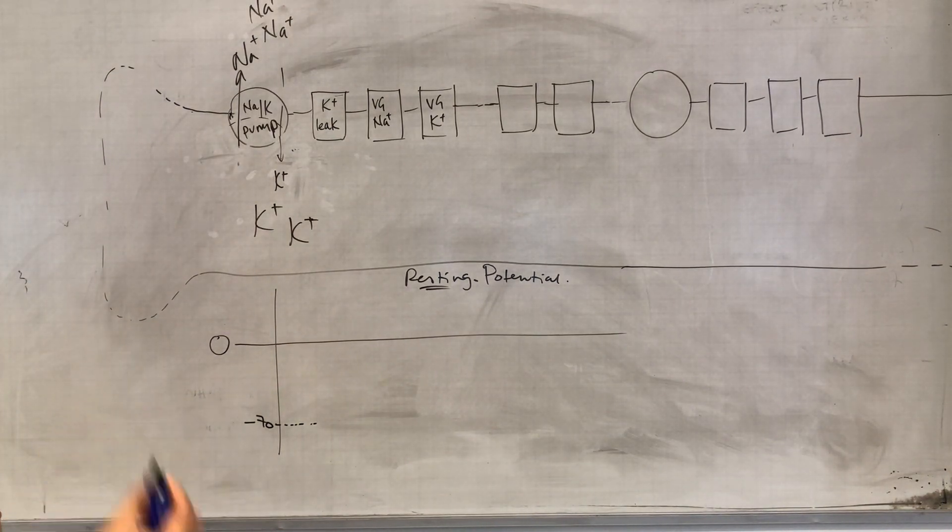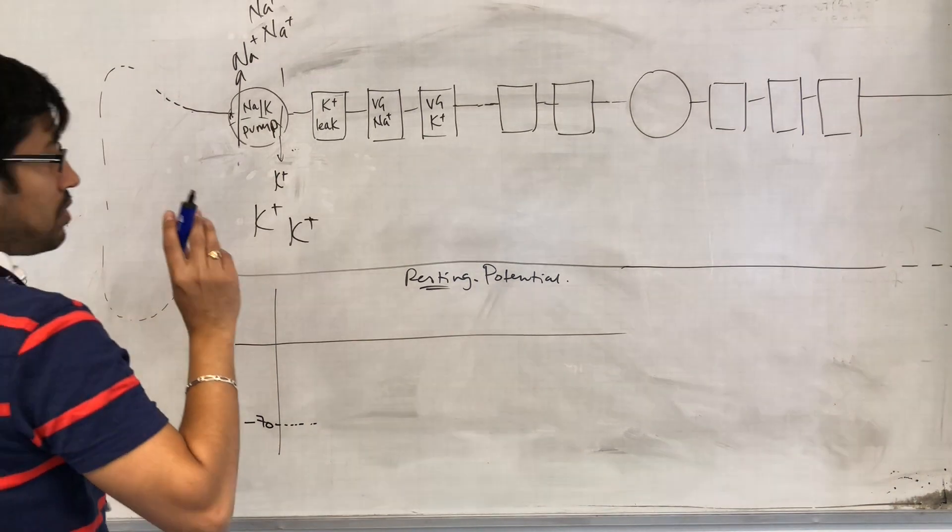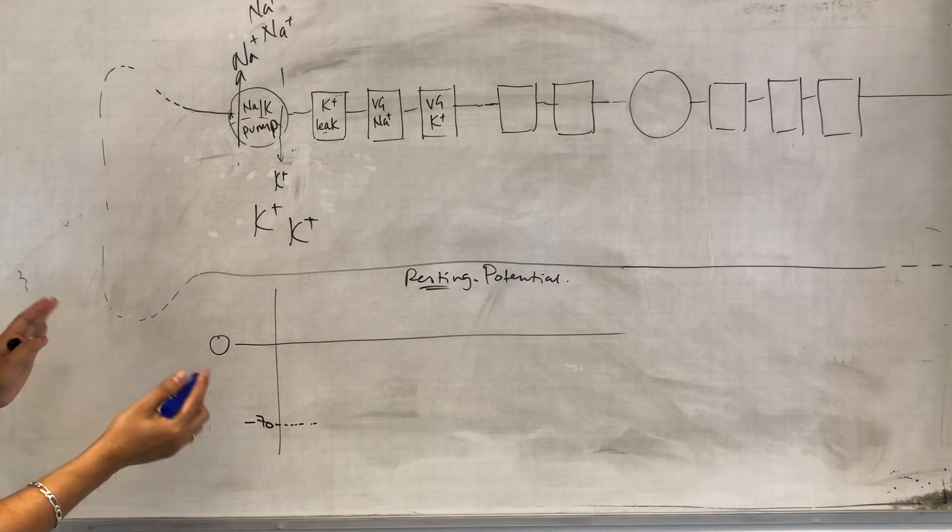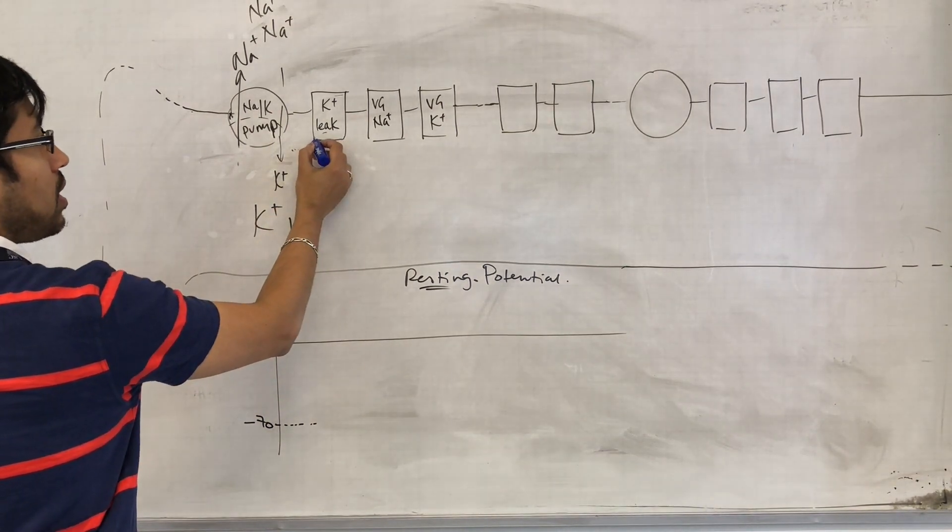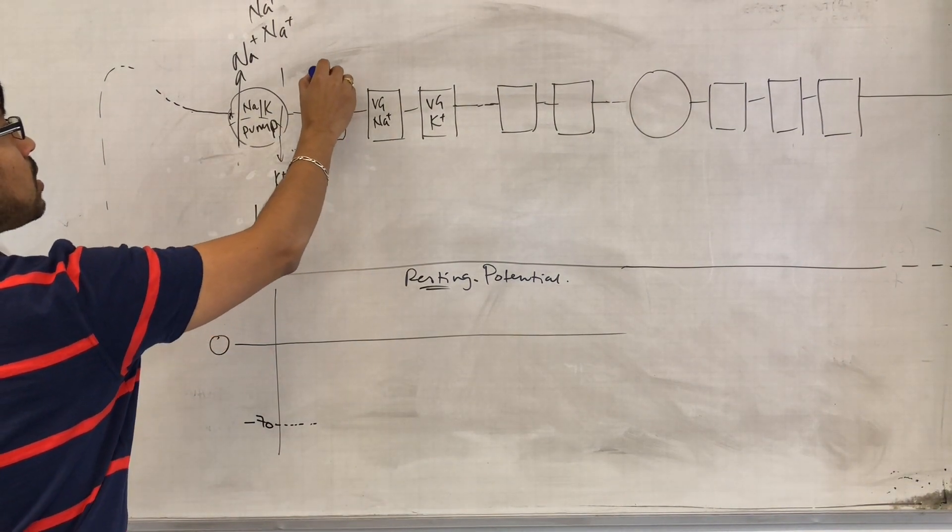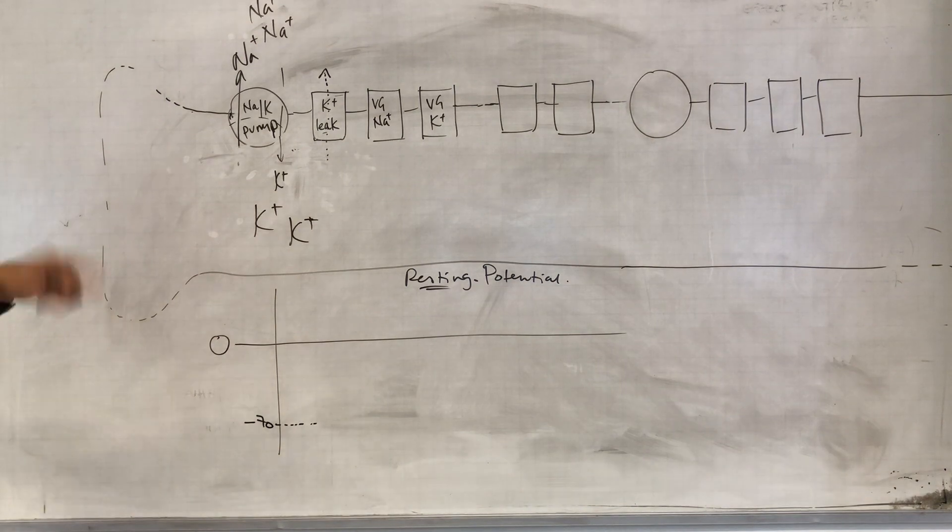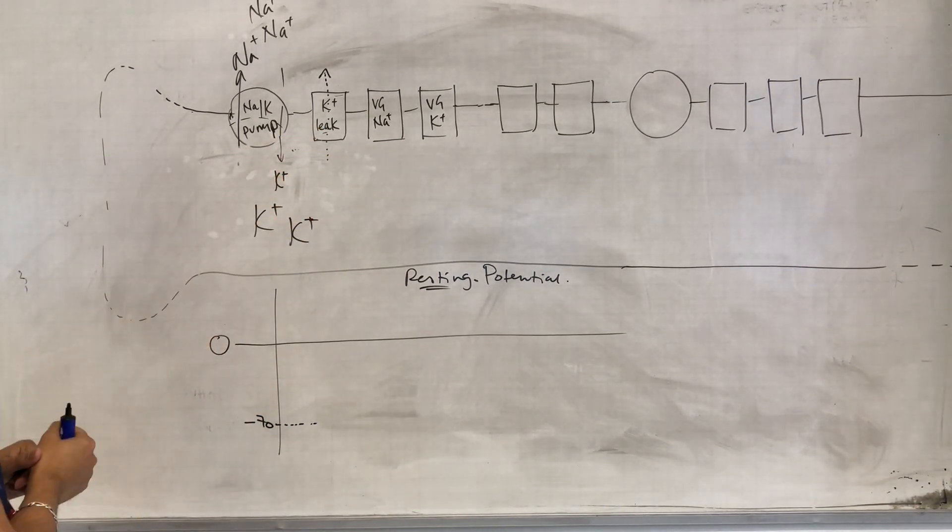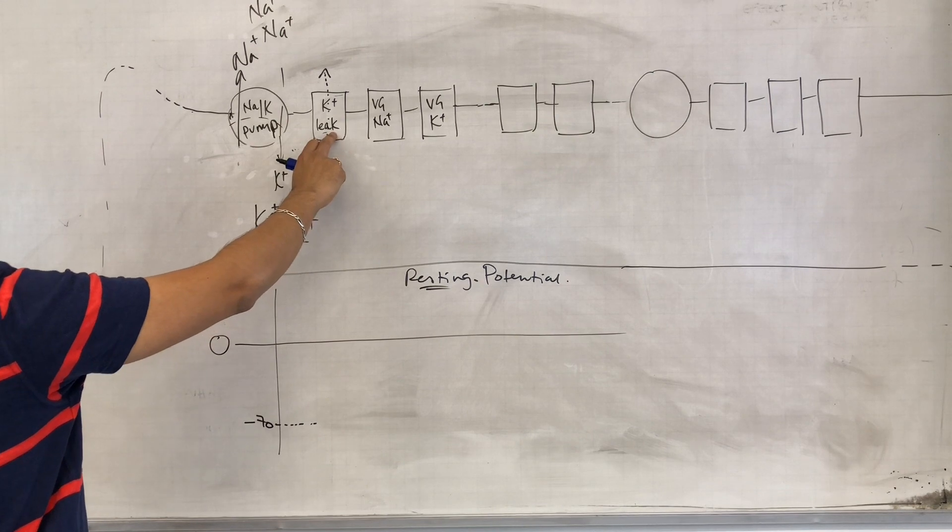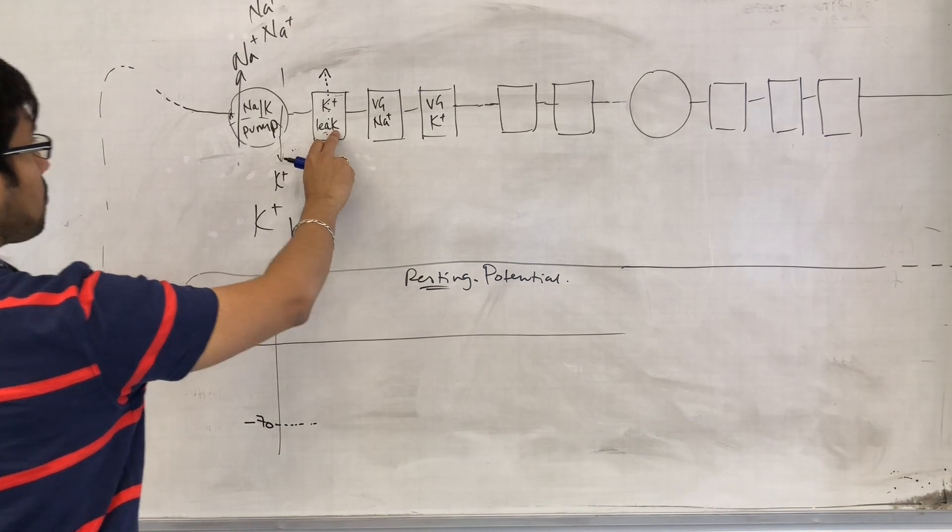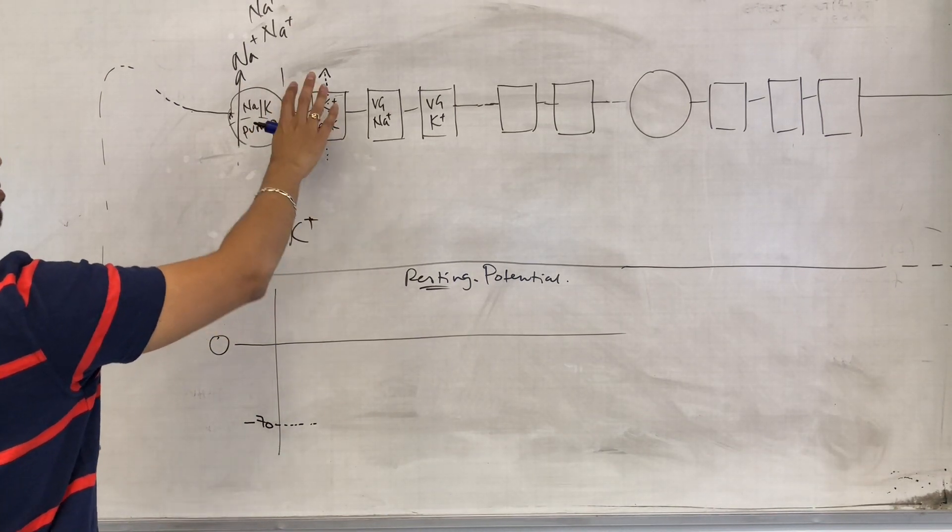So why do we have a resting potential of minus 70? The reason is these potassium leak channels or potassium channels that are always open. They allow the movement by facilitated diffusion of potassium out of the cell down its chemical gradient. We've got loads of potassium inside the cell, and these channels, these protein channels, they are open for potassium, not for sodium.